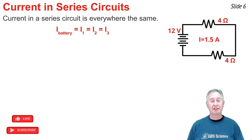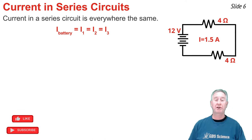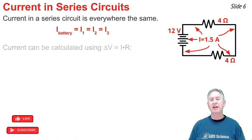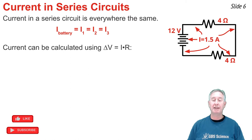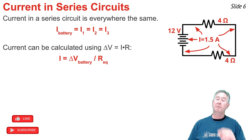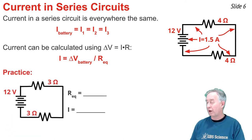For a series circuit, the current is everywhere the same — the current in the battery is the same as the current in the first resistor, the second resistor, and the third resistor. You can calculate the current using Ohm's law: delta V equals I times R. Rearranged, the current within any part of the circuit equals the voltage of the battery divided by the equivalent resistance. For the circuit above with its two 4-ohm resistors, the equivalent resistance is 8 ohms. 12 divided by 8 gives a current of 1.5 amps.